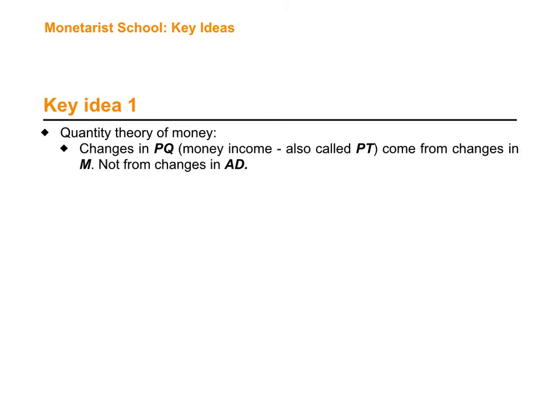So let's start with key idea number one: the quantity theory of money. We have talked about the quantity equation, and one of the conclusions for the monetary school is that changes in PQ — which is money income, also called PT — are going to come from changes in the amount of money in the economy, not from changes in demand like the Keynesian school proposed.